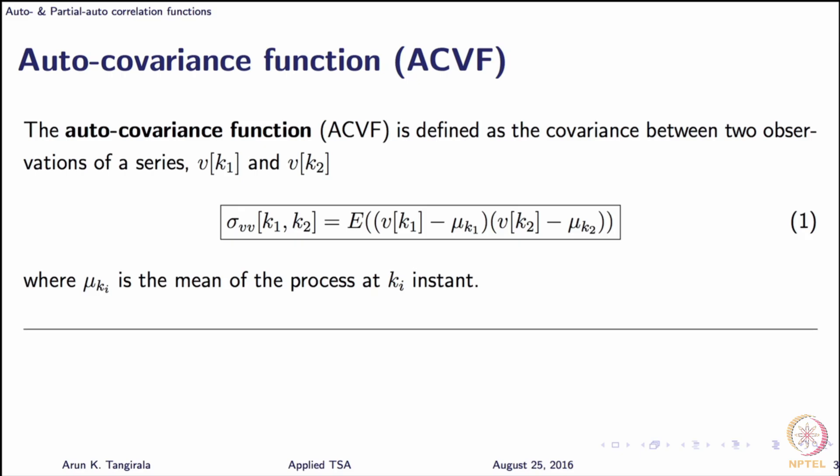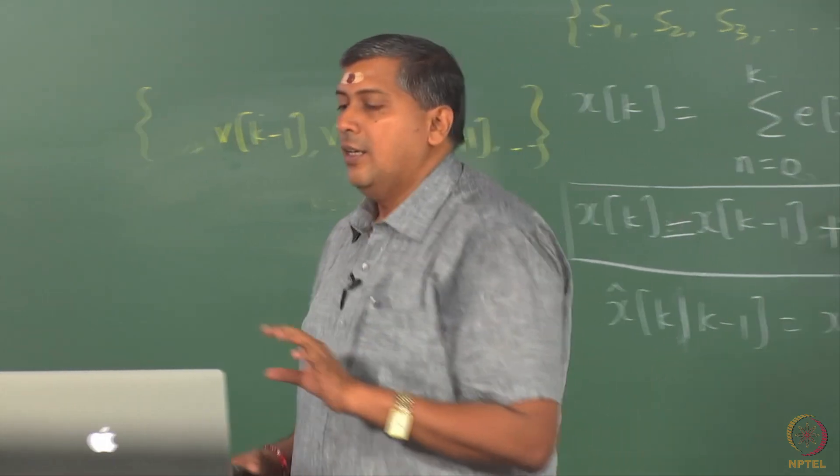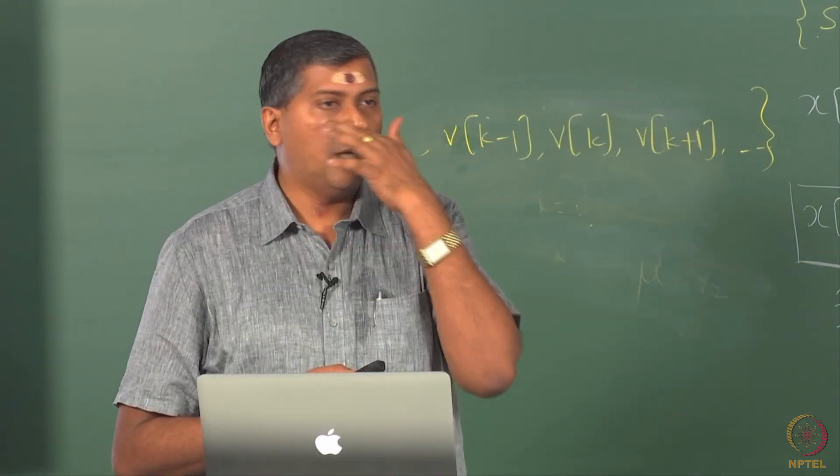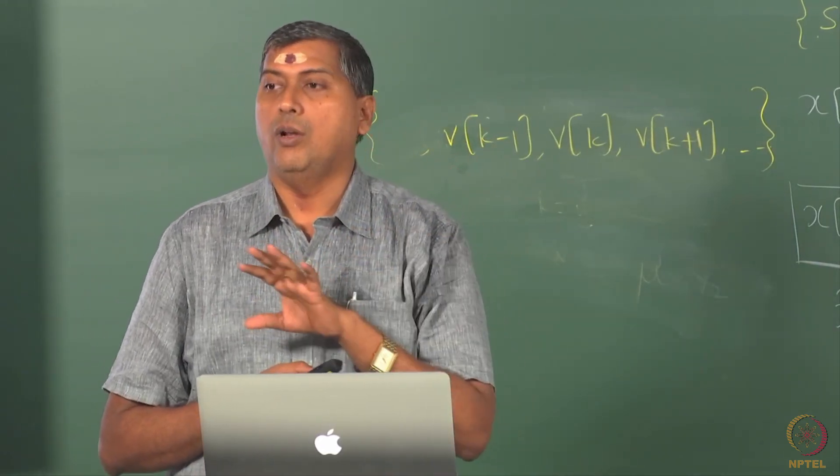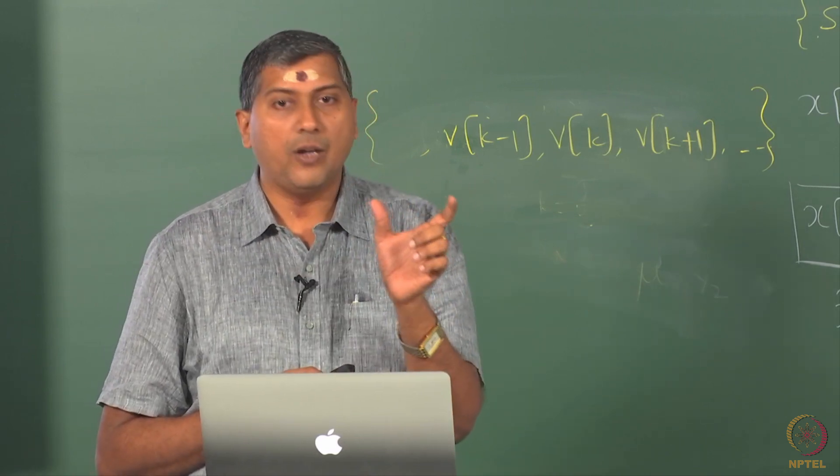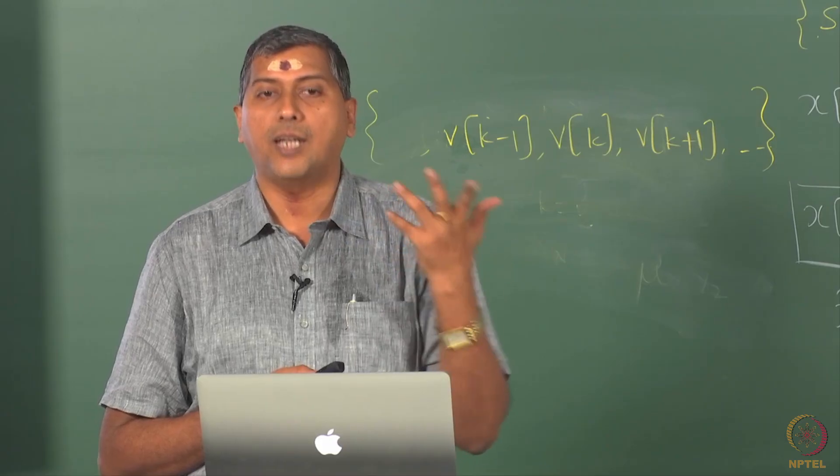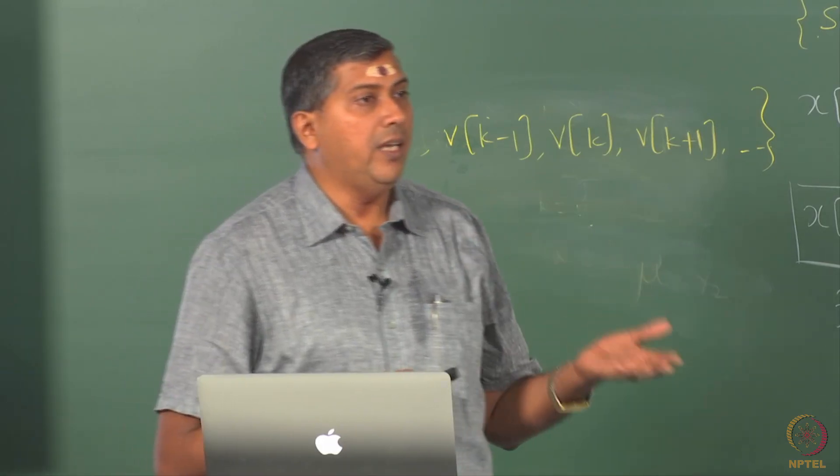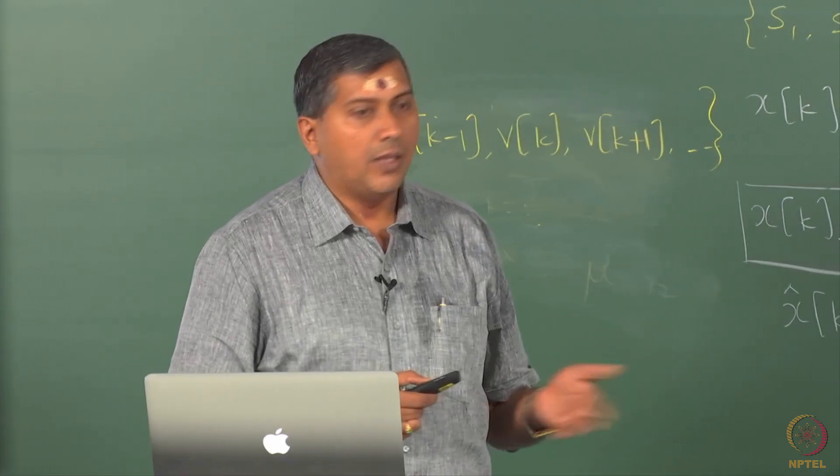When the process is stationary, at least second order stationary, then we know that the second order stationary processes are only dependent on the time difference. That is, a joint distribution of a pair of observations is only dependent on the time difference, not at the time instance, and that the mean remains invariant with time.